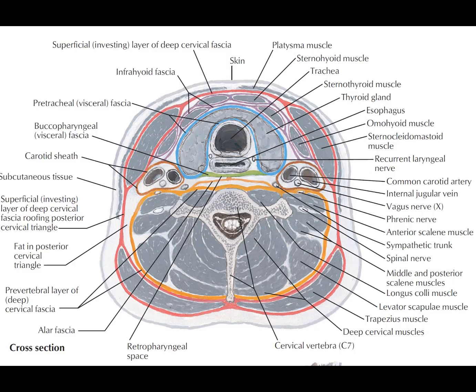The investing layer of the deep cervical fascia is also called the superficial layer of the deep cervical fascia. It is present deeper to the skin, subcutaneous tissue, and the platysma muscle. So the platysma is not covered by this layer. Deeper to the platysma, this superficial layer extends in front of all the infrahyoid muscles.